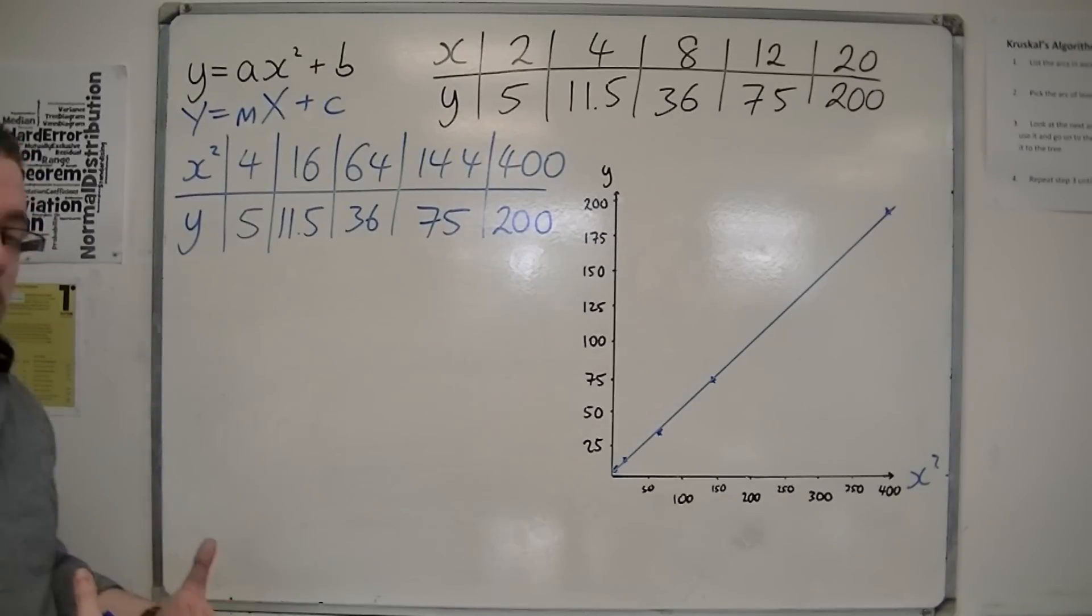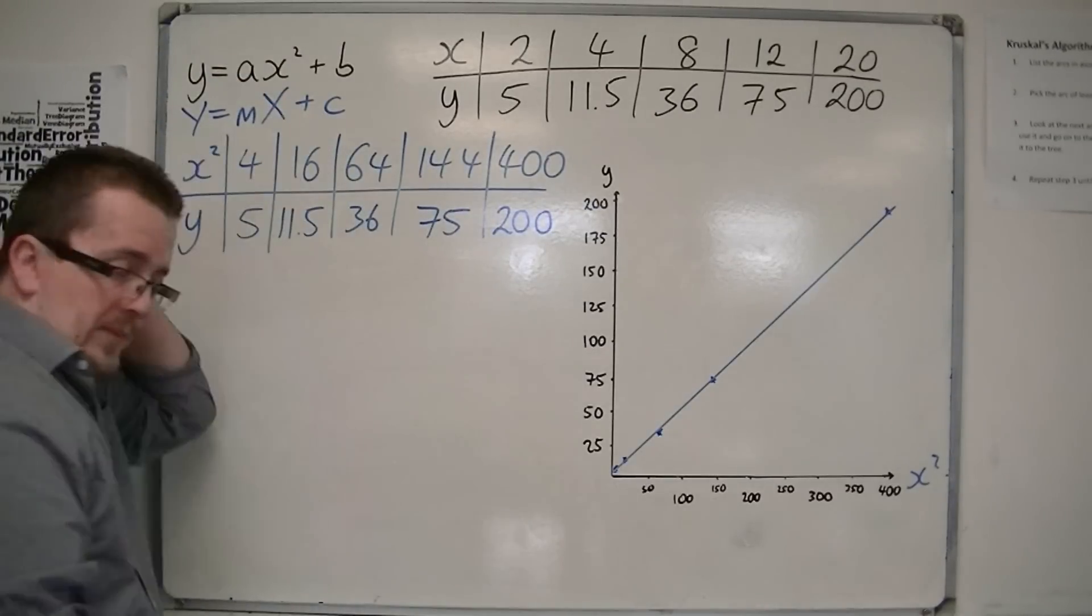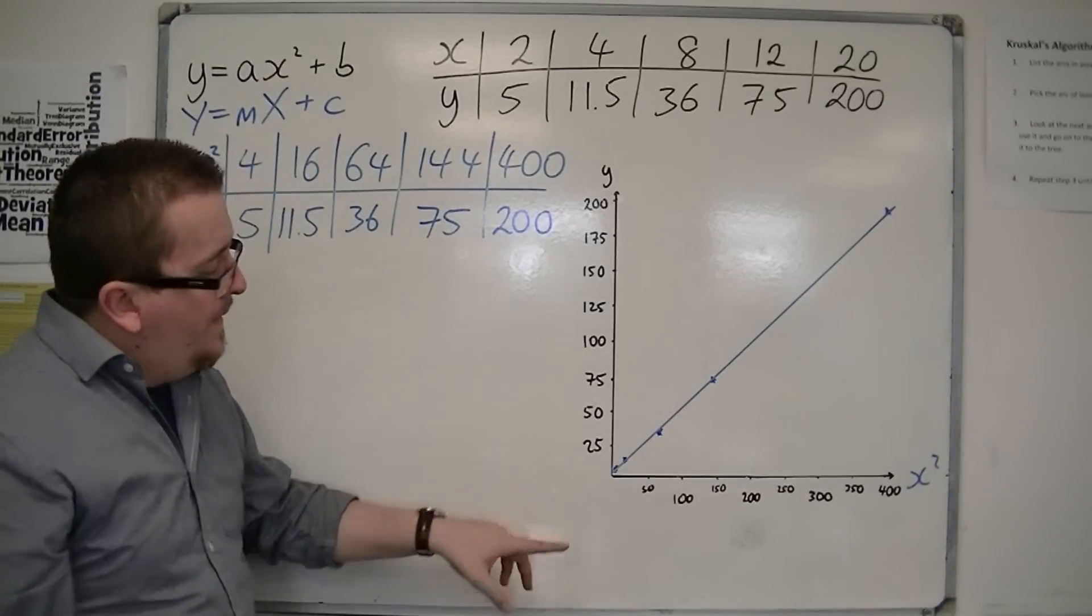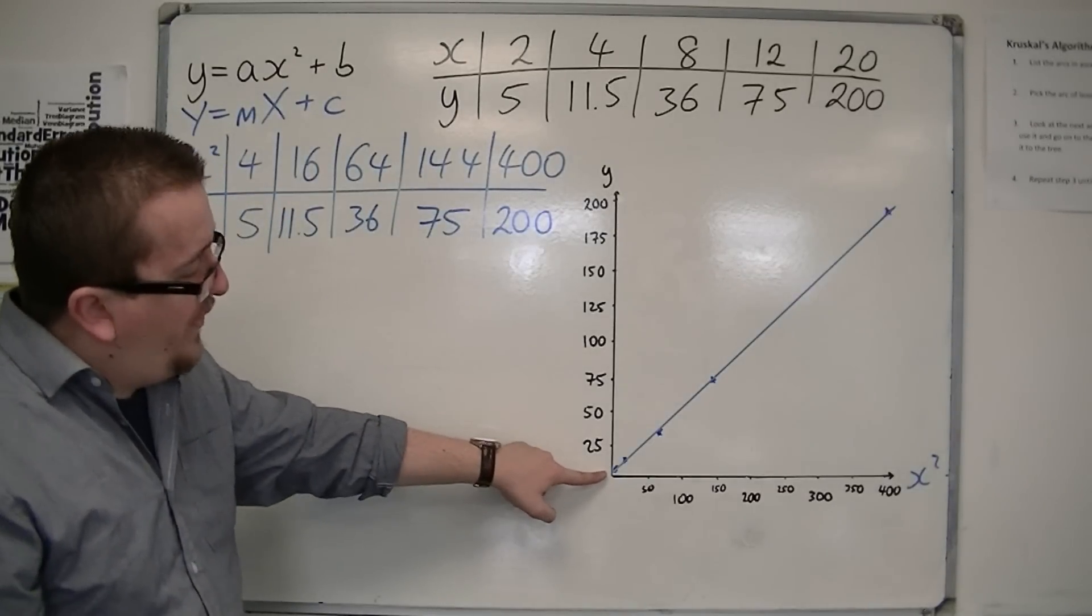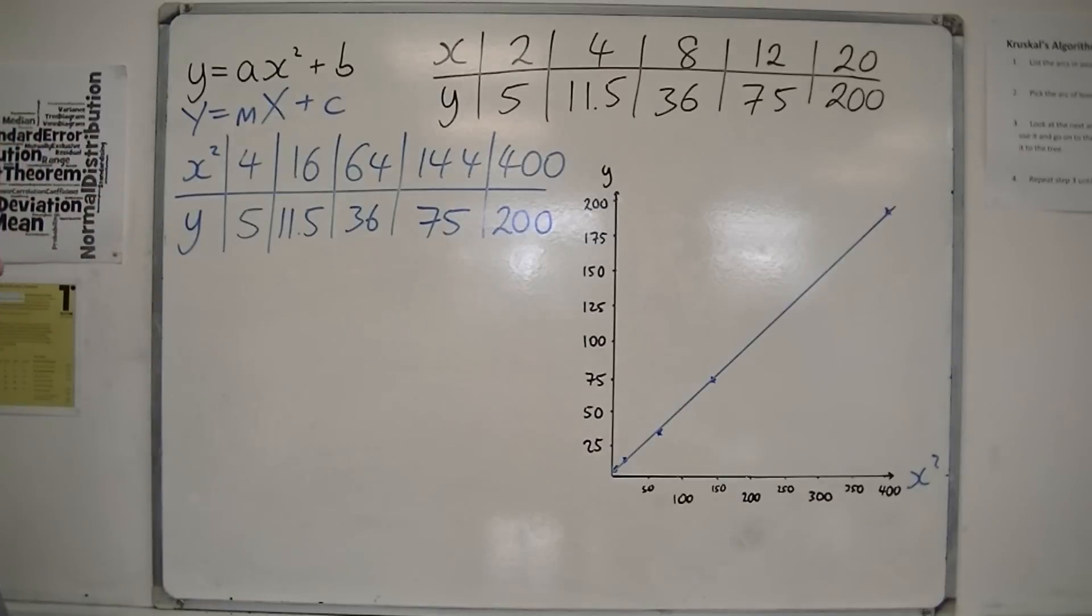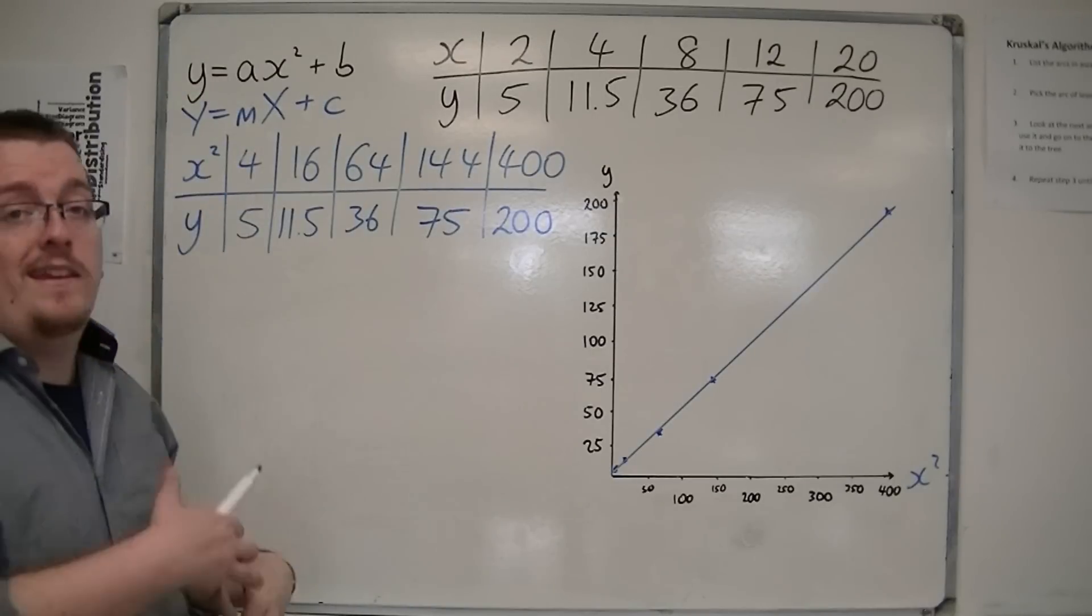Now we want to be able to calculate the value of the a and the b. Now the b, as you can see, is the y-intercept, where it's crossing the y-axis. Now if you've got a quite accurately drawn graph, then you might be able to just determine what that value would be, just by reading off from your graph. On mine, that's going to be quite tricky. So I'm going to try and calculate it more accurately. But first I'm going to work out what a is. Now a, as you can see, is the gradient of the line.